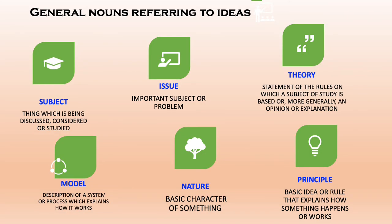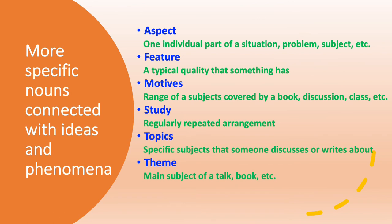You need to associate with specific academic nouns in order to refer to ideas in your writing. Terms like subject, issue, theory, model, nature, principle, etc. should be included in your academic diction. Here you have some more specific nouns connected with ideas and phenomena, such as aspect, feature, motives, study, topics, theme, etc. Learn these words.